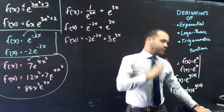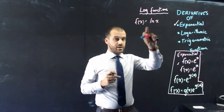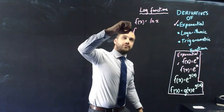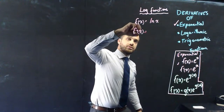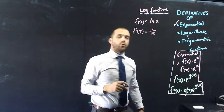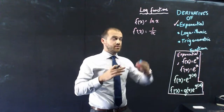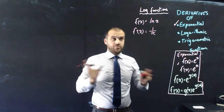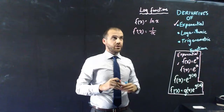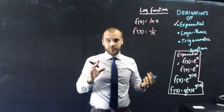Let's do logs. If f of x equals ln x - natural log x - then f dash of x equals 1 over x. That's a bit of a surprising result. That's the first easy rule to follow: if you see ln x, it becomes 1 over x when you find the derivative.